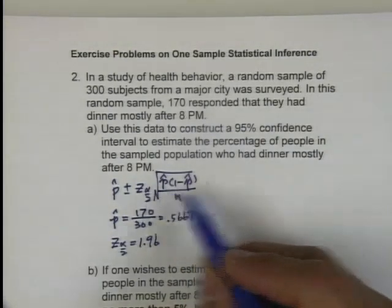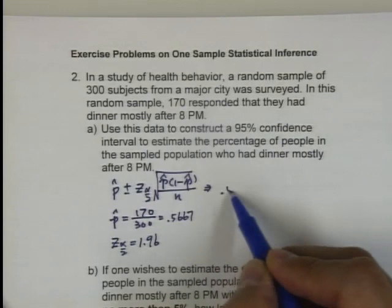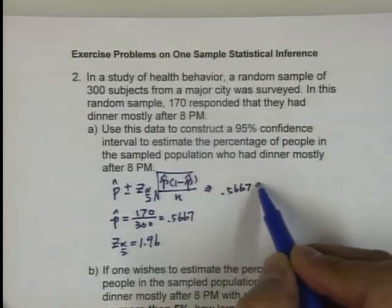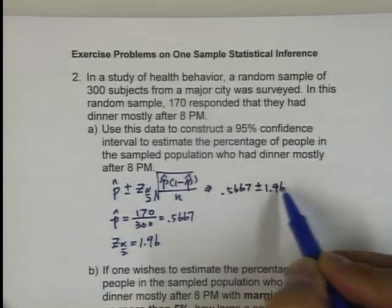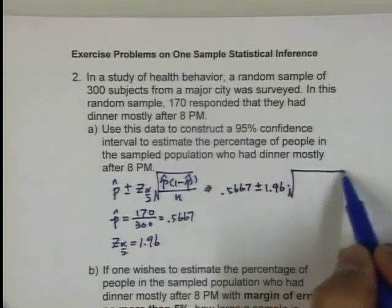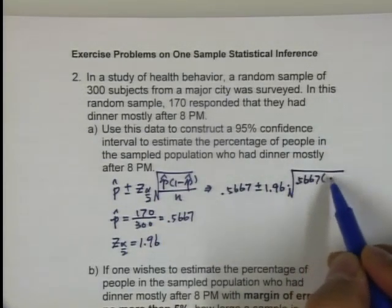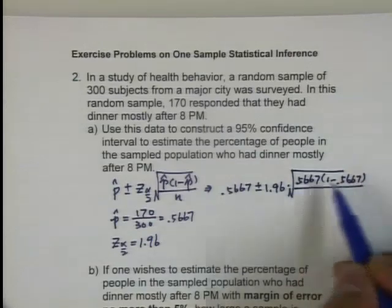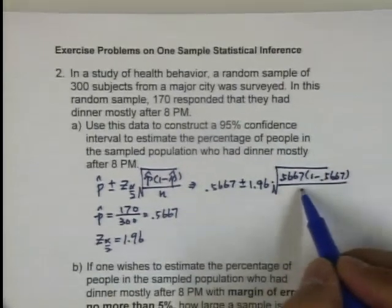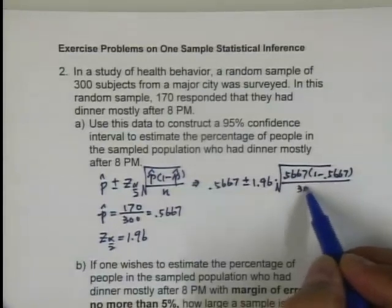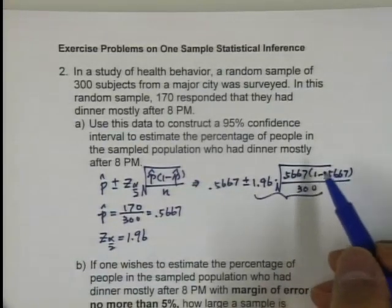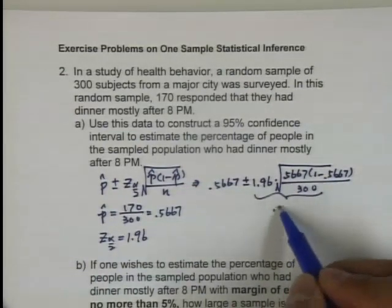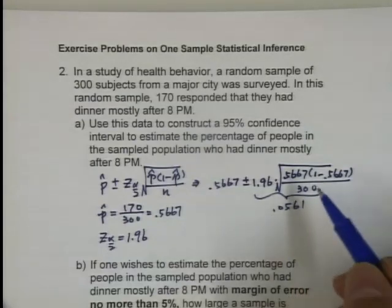So what I can do is just plug in this formula, 0.5667 plus or minus z-score 1.96 times square root of 0.5667, 1 minus 0.5667 divided by 300. So this number is 0.0561.